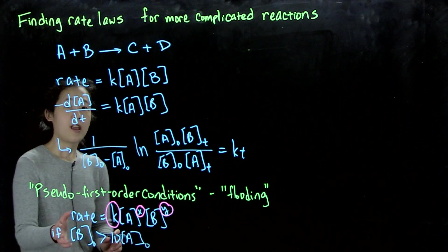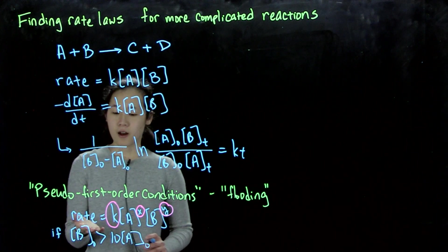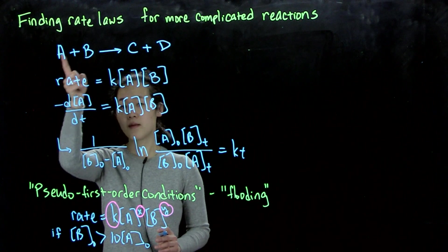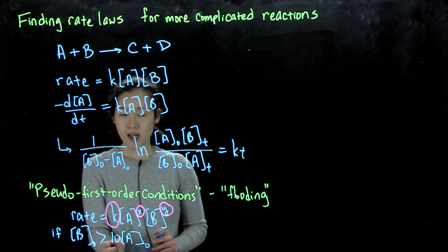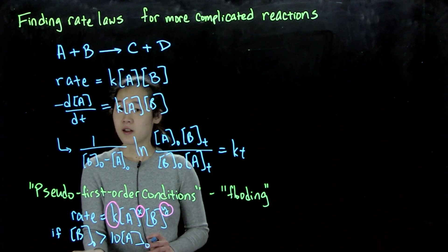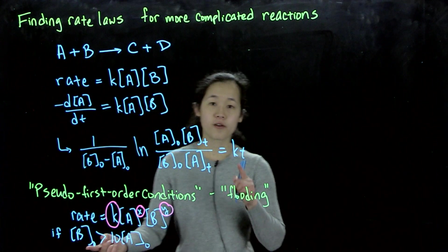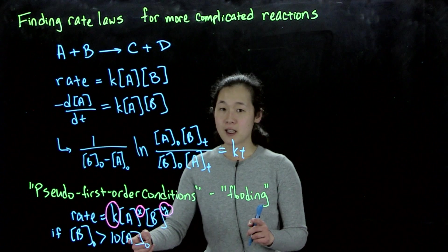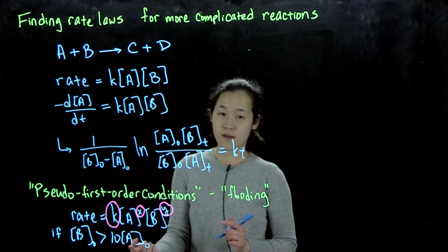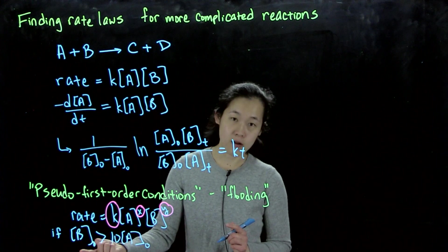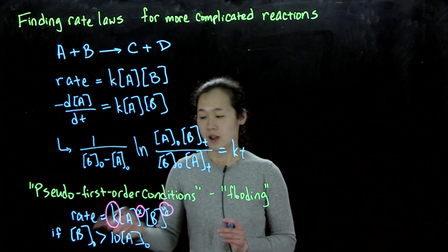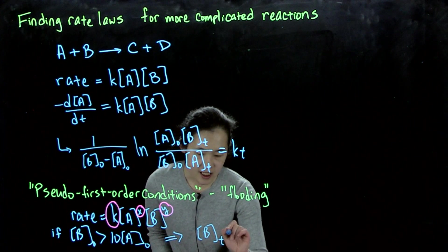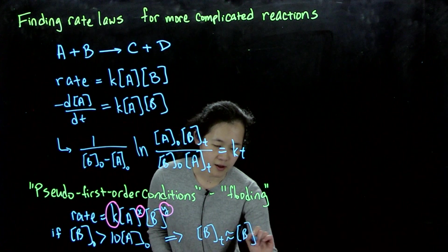So what this means is that if A and B are stoichiometric, as this reaction proceeds, we're always going to have a huge excess of B compared to A. So what this means is that this B, the concentration of B will not change a lot. So what we're doing is we're flooding it in B. For example, if the reaction proceeds 50%, we'll lose half of our concentration of A, but we'll still have 9.5 equivalents, at least, of B. So overall, what this means is that B at time T is going to be approximately equal to the initial concentration of B.